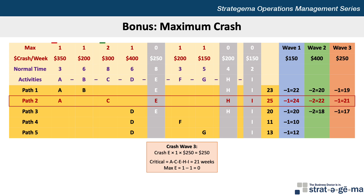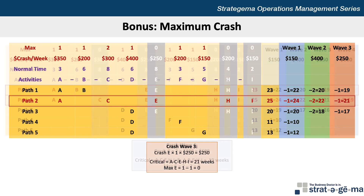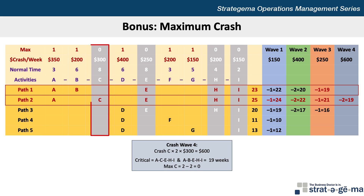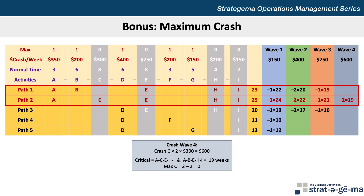To keep going, we look at the critical path again and choose between A and C. We can crash activity A by one week at a cost of $350 or C by two weeks at a cost of $300 per week. C is the least expensive and we can crash it by two weeks, so we subtract 2 weeks off each path containing activity C, which is only path 2. This brings path 2 down to 19 weeks, and activity C can no longer be crashed. But something interesting has happened — notice now that we have two critical paths, path 1 and path 2, both at 19 weeks. We could have crashed activity A by one week instead, and path 2 would remain critical, but our objective is to knock off as many weeks as we can during each crashing wave.